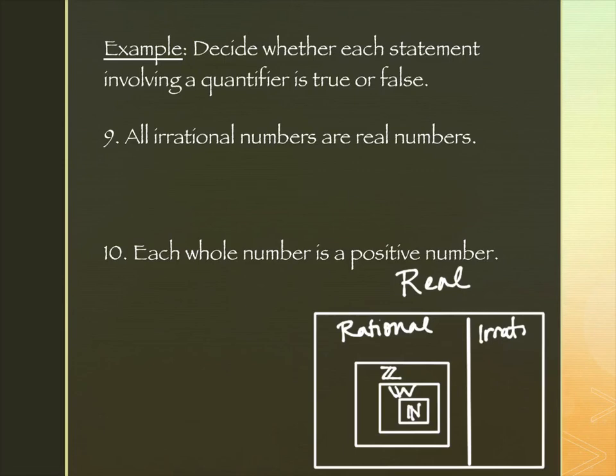We're going to decide if statements including quantifiers are true or false. Statement nine says "all irrational numbers are real numbers." In the diagram, the irrational numbers are a sliver, but the entire diagram is real numbers — yes, that's a true statement.